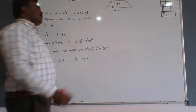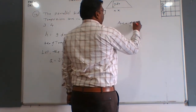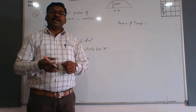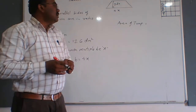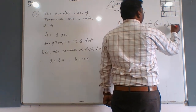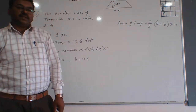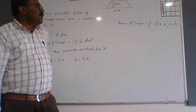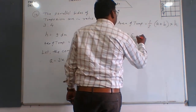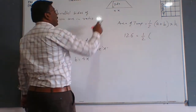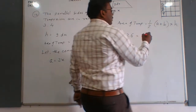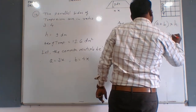The area of the trapezium is also given as 126 dm square. Since we know the area of the trapezium, the formula is: half multiplied by the sum of the parallel sides multiplied by the height. We substitute the values: 126 = (1/2) × (3x + 4x) × 9.